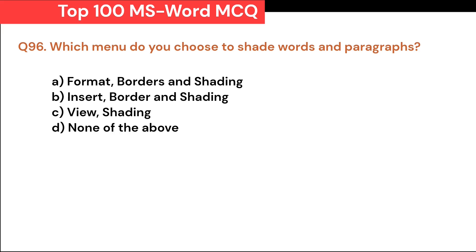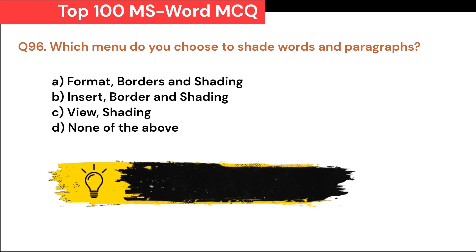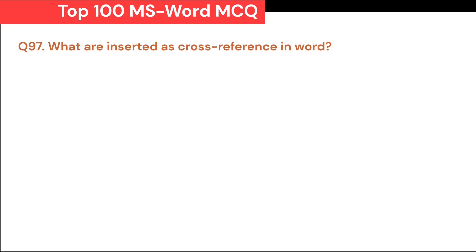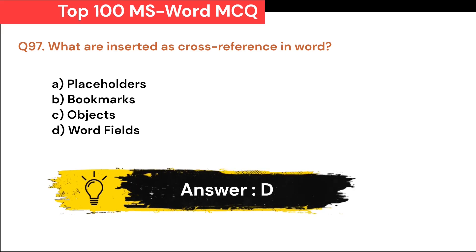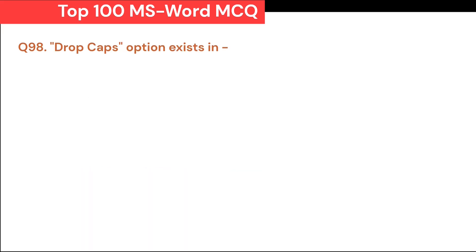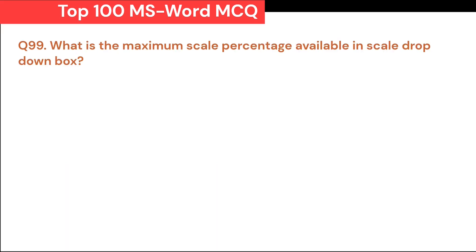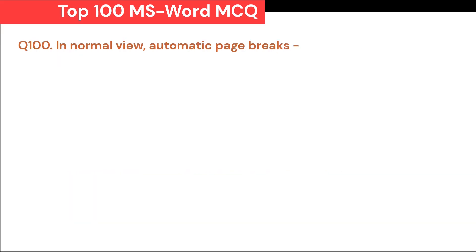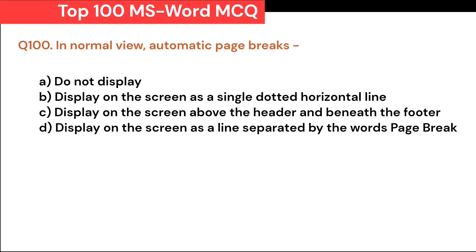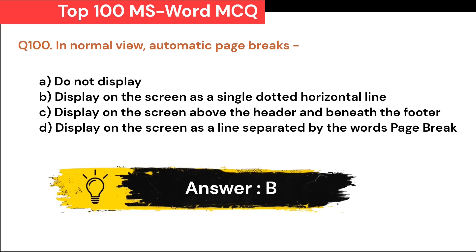Which menu do you choose to shade words and paragraphs? A. Format Borders and Shading. B. Insert Border and Shading. C. View Shading. D. None of the above. Correct answer is A. Format Borders and Shading. What are inserted as cross-references in Word? A. Placeholders. B. Bookmarks. C. Objects. D. Word fields. Correct answer is D. Word fields. Drop Caps option exists in: A. Setup. B. Text. C. Timing. D. Sliders. Correct answer is B. Text. What is the maximum scale percentage available in the scale drop-down box? A. 500. B. 200. C. 100. D. 90. Correct answer is B. 200. In Normal view, automatic page breaks display on the screen as a single dotted horizontal line.